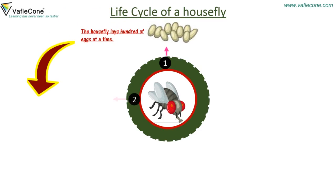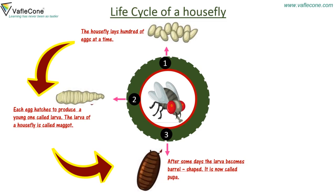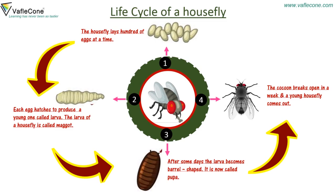Life cycle of a house fly: the house fly lays hundreds of eggs at a time. Each egg hatches to produce a young one called a larva. The larva of a house fly is called a maggot. After some days the larva becomes barrel-shaped and is now called a pupa. The cocoon breaks open in a week and a young house fly comes out.